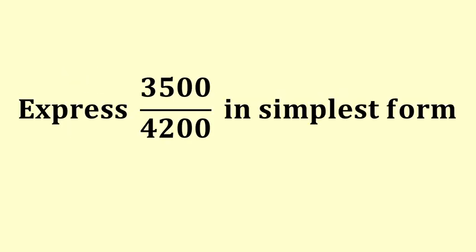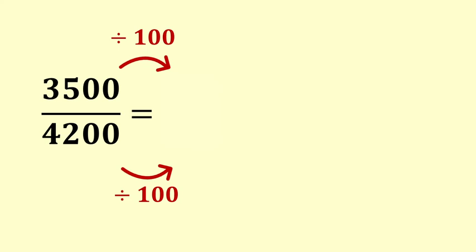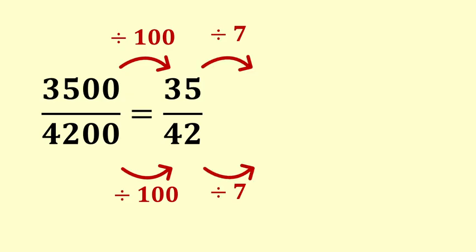What about expressing three thousand five hundred over four thousand two hundred in simplest form? But it's not as tricky as it looks. The first thing is to divide top and bottom by a hundred, so we get thirty-five over forty-two. And then we can see that seven goes into thirty-five and it goes into forty-two. So we divide the top and the bottom by seven to get five sixths.